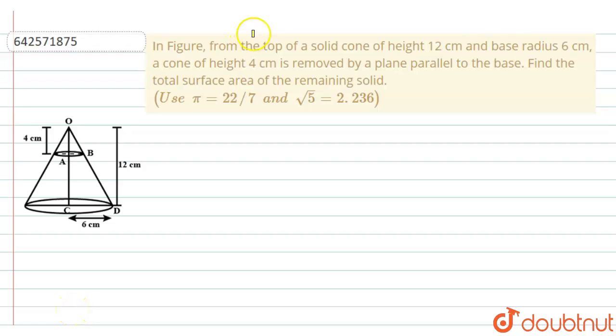The question says that from the top of a solid cone of height 12 cm and base radius 6 cm, a cone of height 4 cm is removed by a plane parallel to the base. Find the total surface area of the remaining solid.